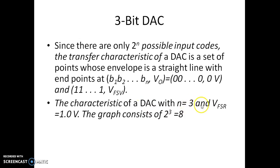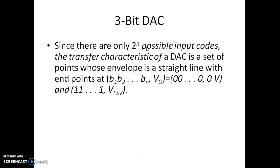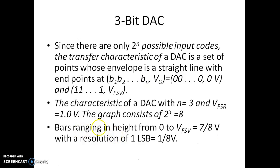For a DAC with n=3 and VFSR=1 volt, we took VCC=1 volt, so the output steps are 1/8 volt, 2/8 volt, and the maximum voltage is 7/8 volts, which is less than 1 volt. The range is from 0 to 7/8 volt with a resolution of 1 LSB, which is 1/8 volt. We know that LSB equals VFSR multiplied by 2 to the power of minus n, so 2 to the power of minus 3 equals 1/8, and VFSR is 1 volt in this case.